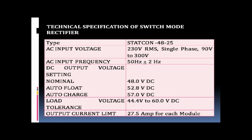DC output voltage setting: nominal 48 volts DC, auto float 52.8 volts DC, auto charge 57 volts DC, load voltage tolerance 44.4 volts to 60 volts DC. Output current limit: 27.5 amperes for each module.